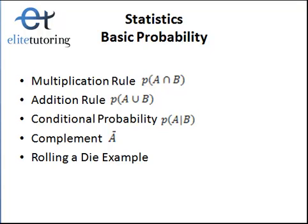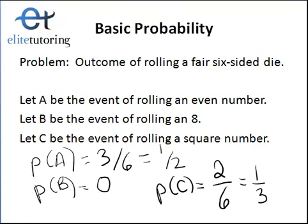If you haven't watched Parts 1 and 2 yet, you'll want to go back and watch those so that you're not lost. I will show you our events again, just in case you want to just watch this video. A is the event of rolling an even number, B is rolling an 8, and C is rolling a square number. Those are the individual probabilities we had already calculated.